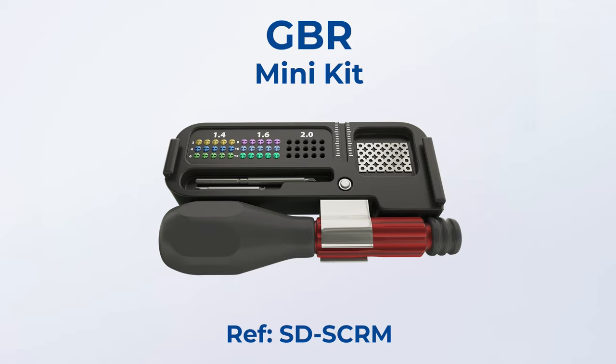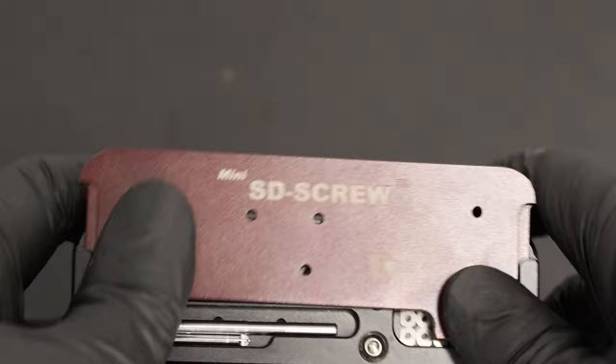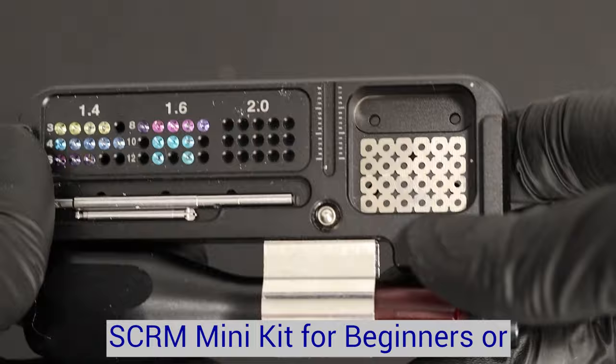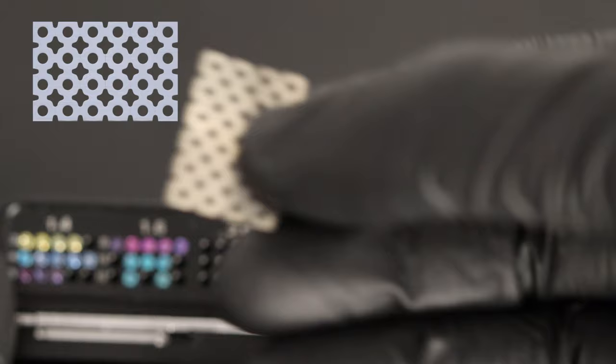GBR money screw kit is used for fixation of membrane, mesh, and bone blocks. It could be a good option for the doctor who's taking the first steps in guided bone regeneration or for an experienced clinician on the go that needs to move through several offices.